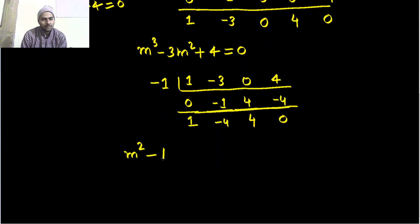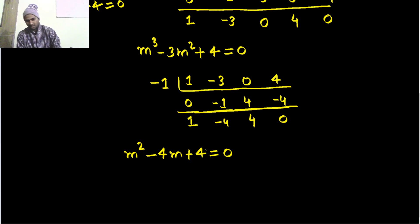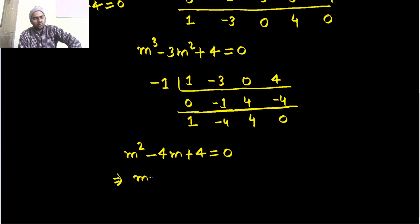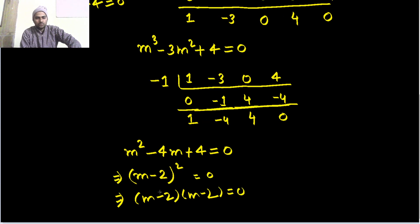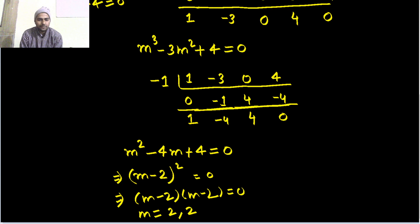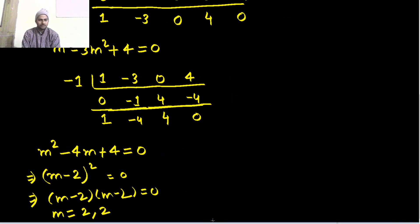Now we have reduced to quadratic: m squared minus 4m plus 4 equals 0. Now don't be so blind that you can't see the roots — this is nothing but m minus 2 whole square. So you can write this as m minus 2 times m minus 2 equals 0, giving you two roots, both equal to 2.